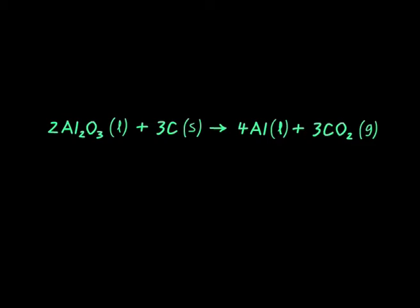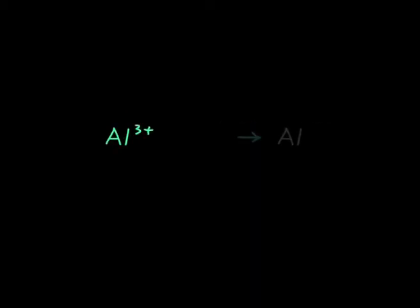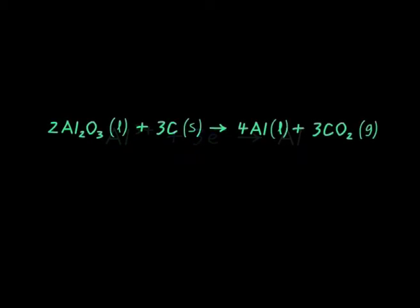Let's look at the change to aluminium. Three-plus ions were converted to neutral atoms. For this to happen, each ion must gain three electrons. And if they gained electrons, something must have given them up. In other words, a reaction occurred in which electrons were transferred from one substance to another. So we know this must be a redox reaction.